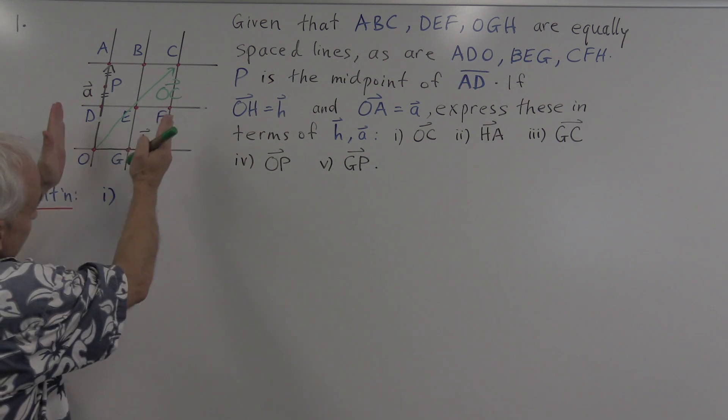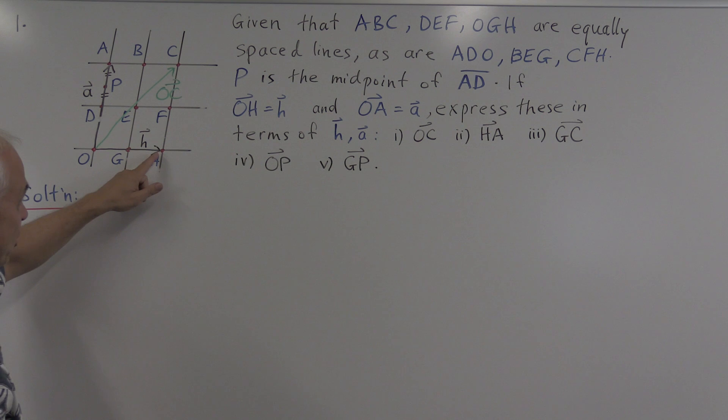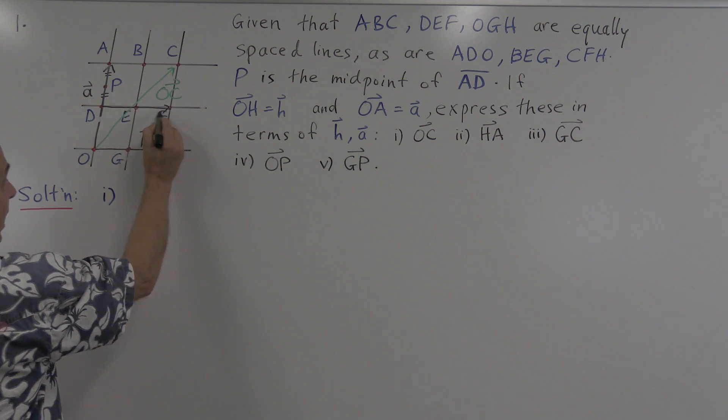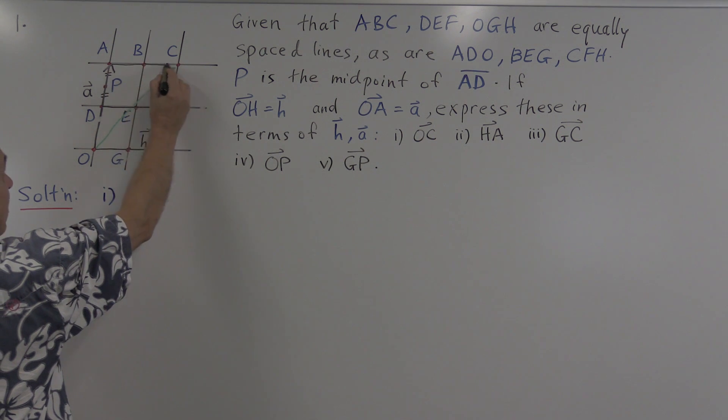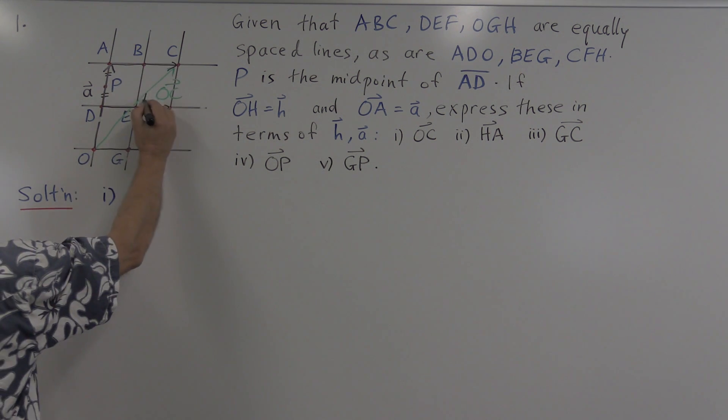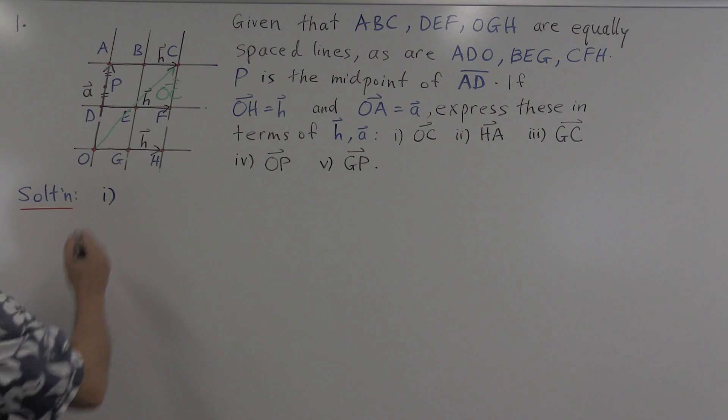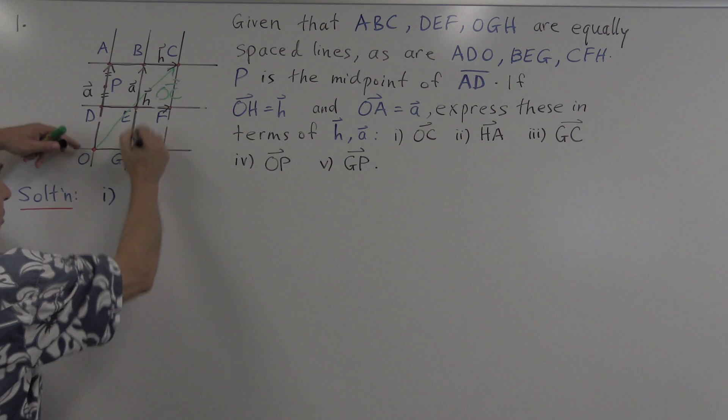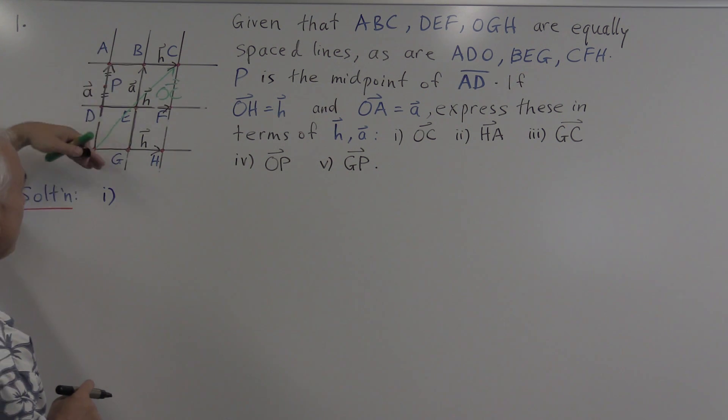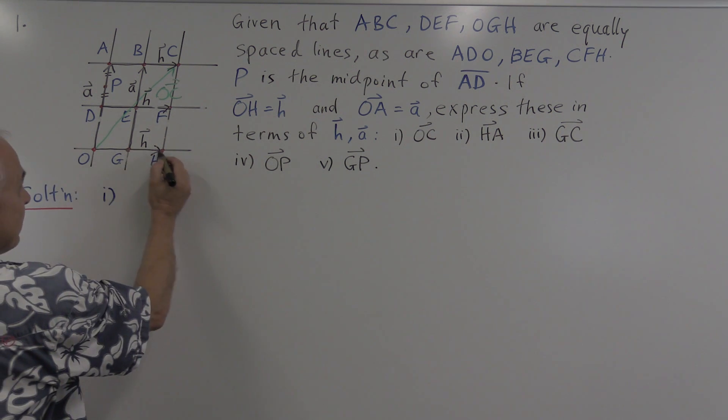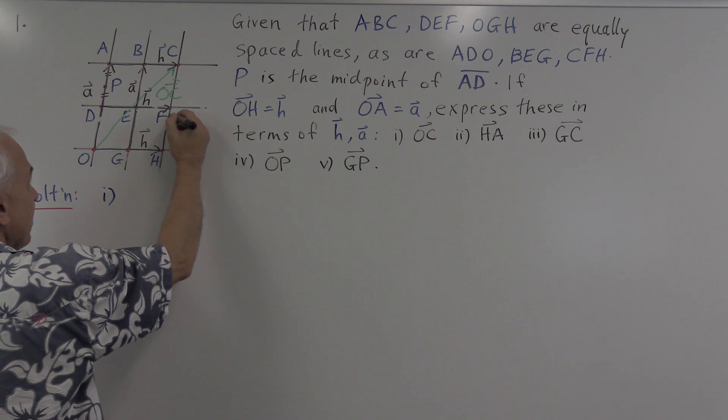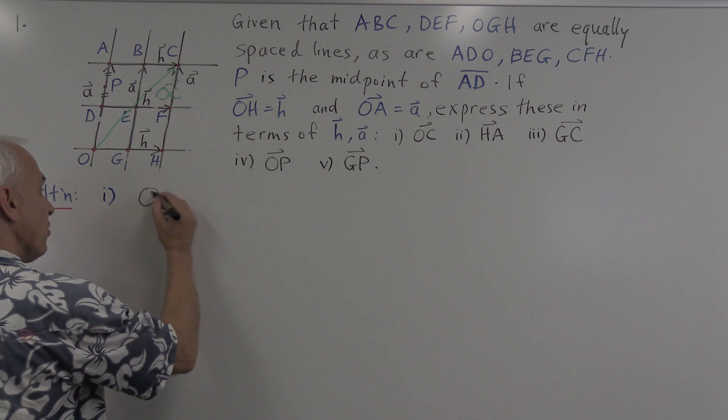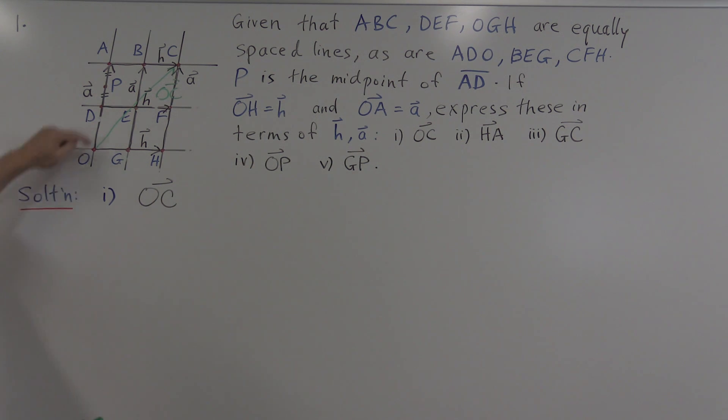We have to recognize that because of these parallel lines, this vector h is actually the same as this vector. That's also h. And so is this vector. That's also h. So these are also h. And this vector we've said is a. And similarly, this one here is also a. This is a parallelogram. You can think there's lots of parallelograms in this picture, because these are equally spaced parallel lines. And this one here, we have another parallelogram. So this vector here is also the vector a.